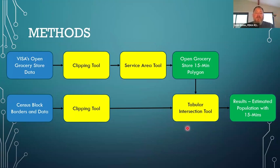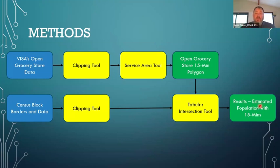Then we used our tabular intersection tool and our census data to overlay the two and figure out the estimated population per polygon of what's happening in that area of concern. The results give us the estimated population within 15 minutes.